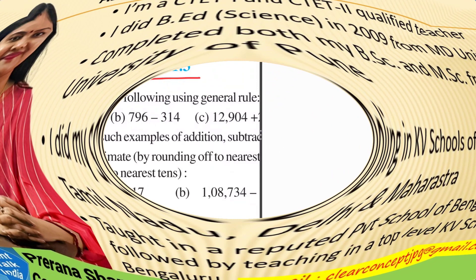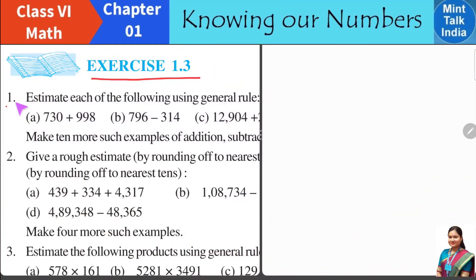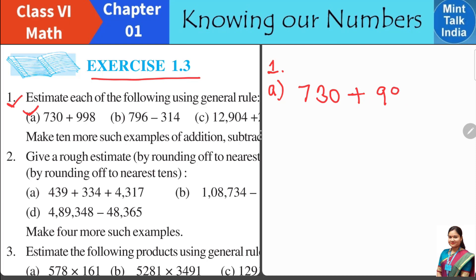Let us start. Question 1: Estimate each of the following using the general rule. Part A: 730 plus 998. The first step is to separately round off each number to their nearest hundreds.